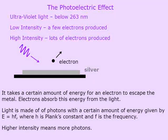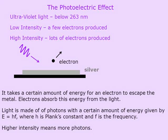Einstein's contribution was to say that light is made of photons, or particles, which have a certain amount of energy given by E equals hf, where h is Planck's constant and f is the frequency. Higher intensity means you have more photons. When an electron absorbs a photon, it absorbs all of the energy from that photon. If the photon doesn't have enough energy to kick the electron out, the electron never escapes. But once the photon energy is high enough, the electron can emerge — and the more photons you have, the more electrons are produced.